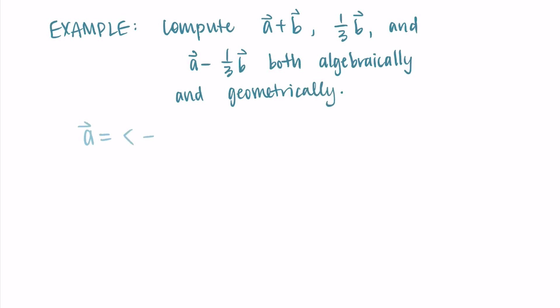So here, let's say the vector a is equal to negative one, four, and the vector b is equal to three, six.